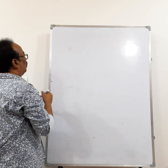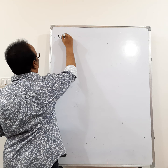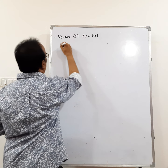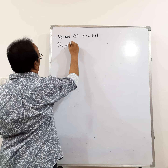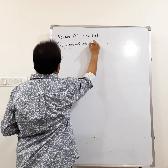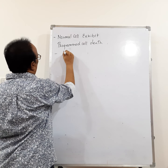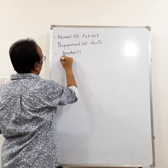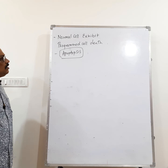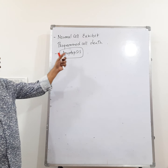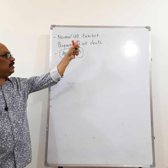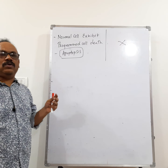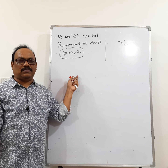One more important difference: normal cells exhibit programmed cell death called apoptosis. However, apoptosis is absent in cancer cells — there is no programmed cell death in tumor cells.